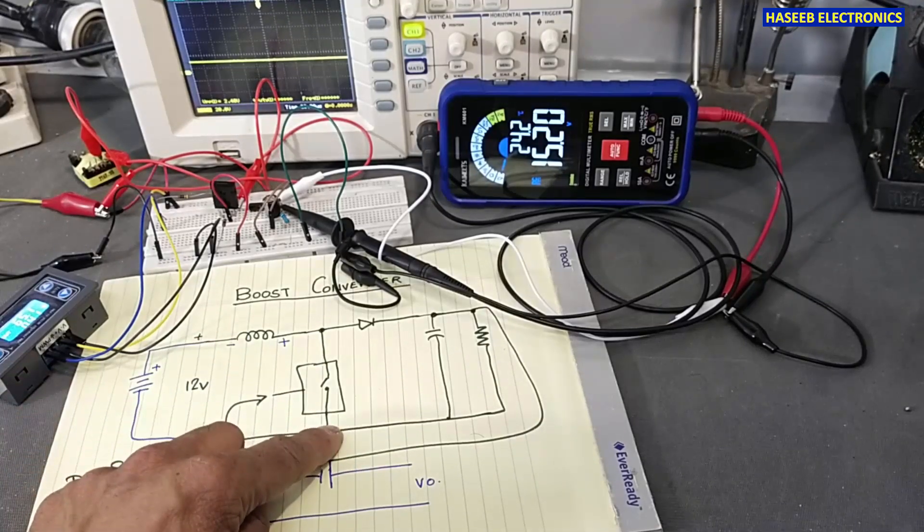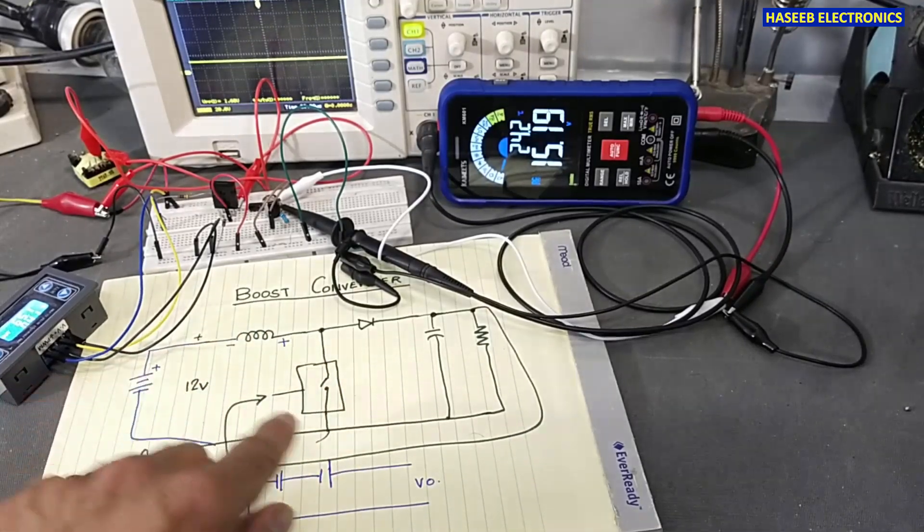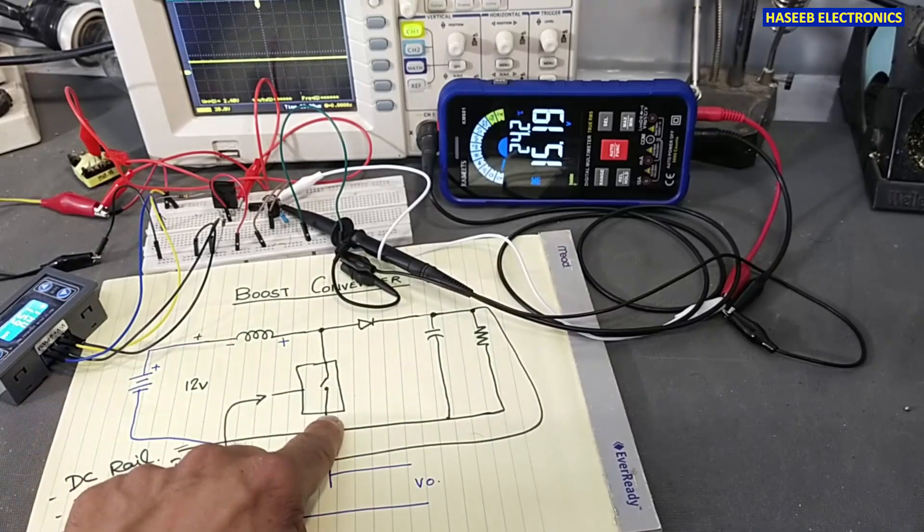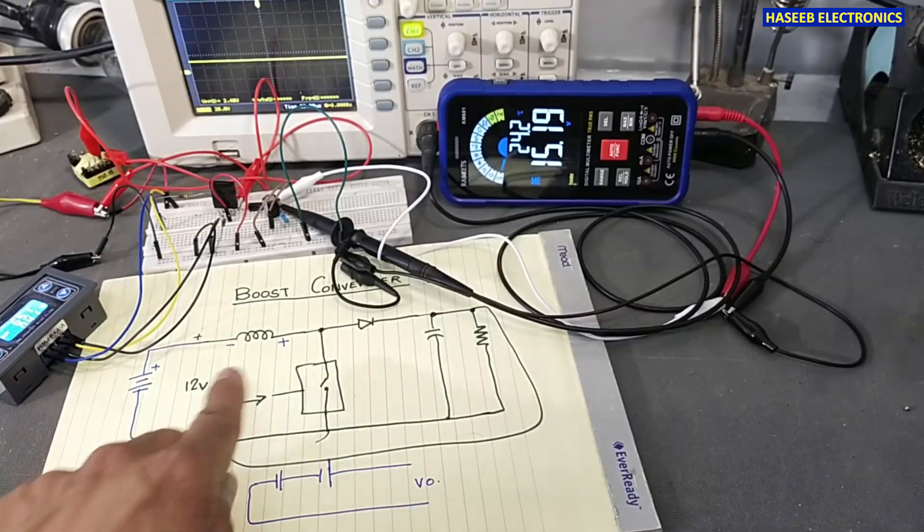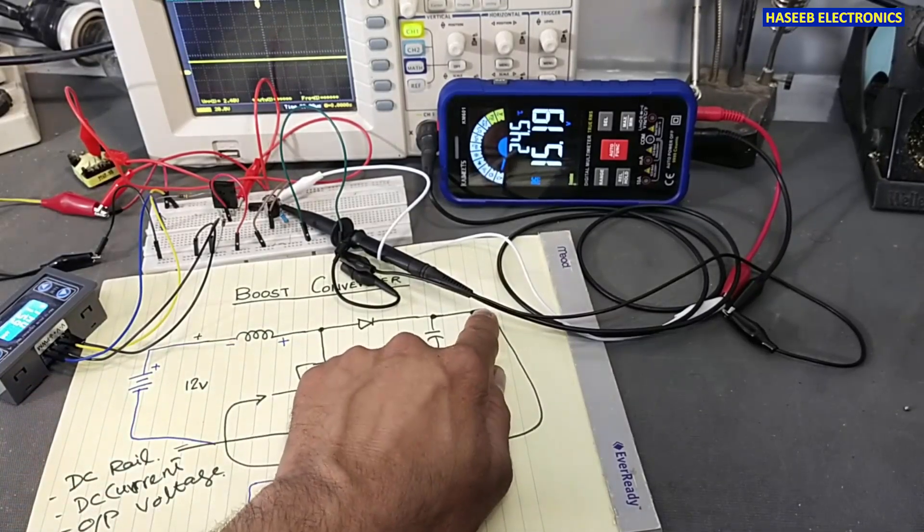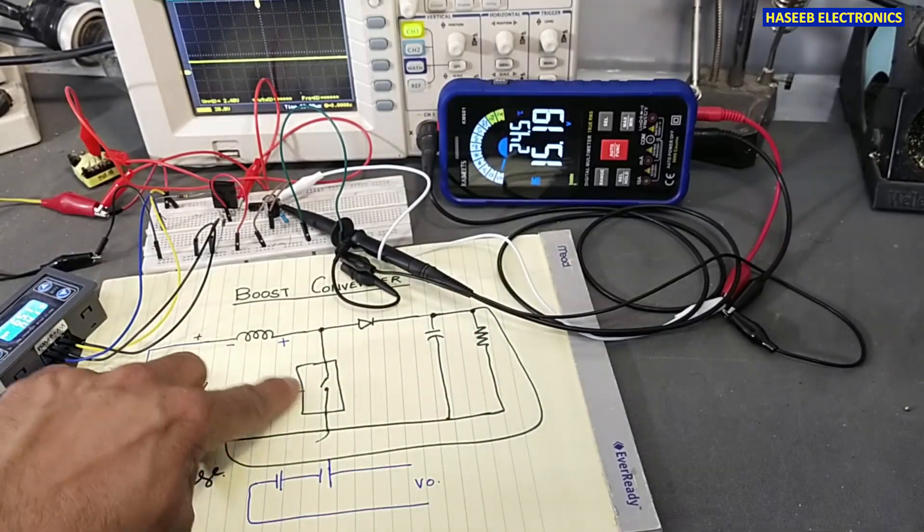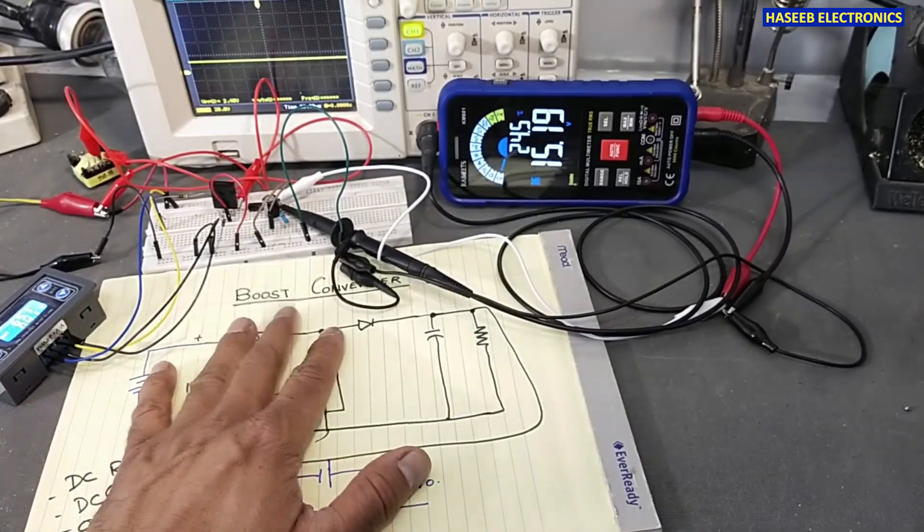So in short circuit condition, this system must remain off. If the voltage is under limit or above limit, this system must remain off. So these are the protections while designing these boost converters.